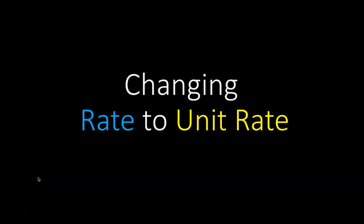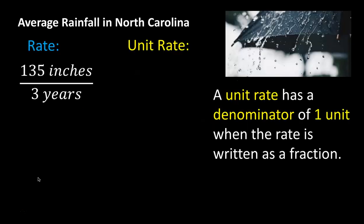This video is focused on changing rate to unit rate. Our first example is about average rainfall in North Carolina. Here is the rate on the left side. North Carolina gets 135 inches every three years.